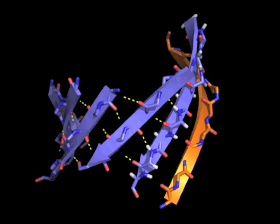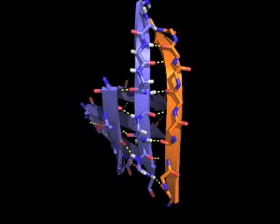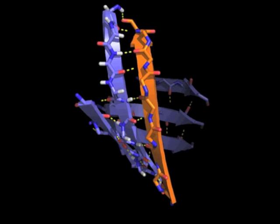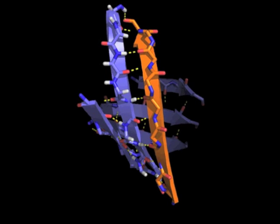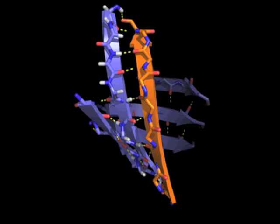But two adjacent strands of this sheet are anti-parallel to each other, and when we examine their hydrogen bonding pattern, we may notice that the hydrogen bonds appear slightly more even and straight.